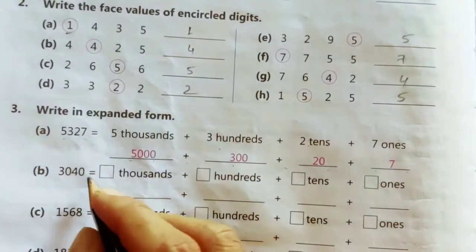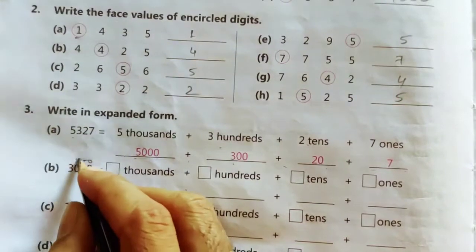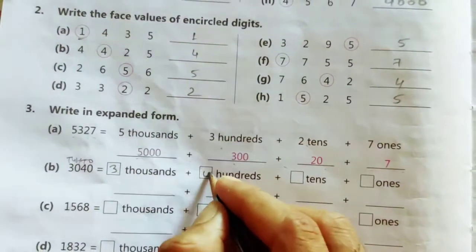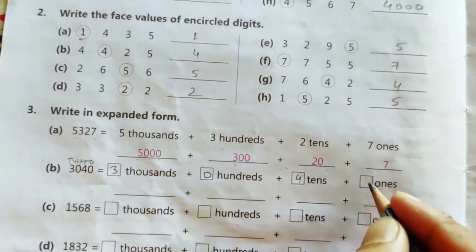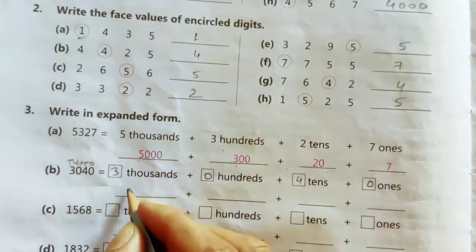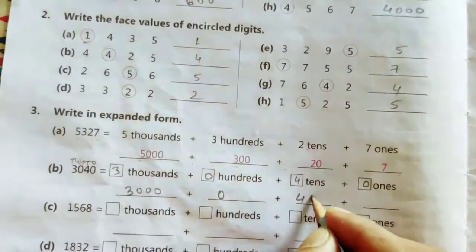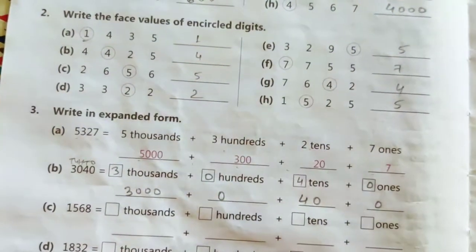In the same way, second one. 1, 10, 100, and 1000. So first of all we need 3, then 0, then 4, and then 0. So it will become 3000 plus 0 plus 40 plus 0.